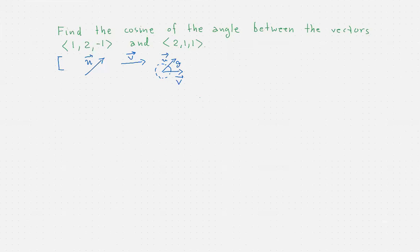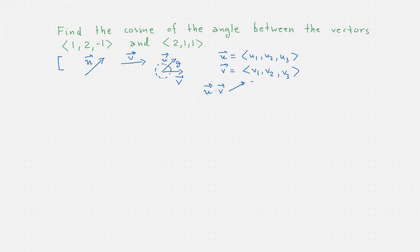So the cosine of the angle will be between 1 and negative 1. The dot product between two vectors is given by two different formulas — it's a number. The first formula is simple for computational purposes: u1*v1 + u2*v2 + u3*v3. These are the coordinates of the vectors, so we multiply the corresponding coordinates and add up all the products.